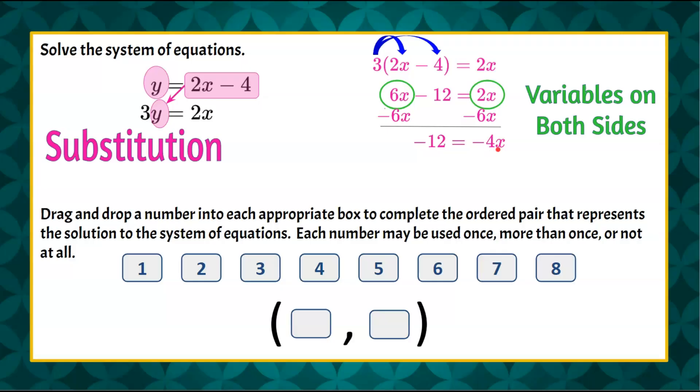Now, to solve for x, I'm going to do the inverse of multiply by negative 4 to isolate x, and I'm going to divide each side of the equation by negative 4. Negative 4 divided by negative 4 is 1, so I'm left with just x, 1x or x. Negative 12 divided by negative 4 is positive 3. So I know that this solution, the x coordinate, is 3.